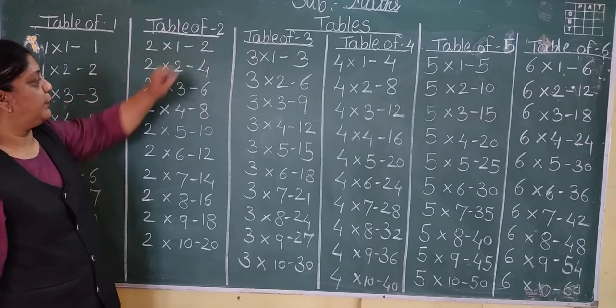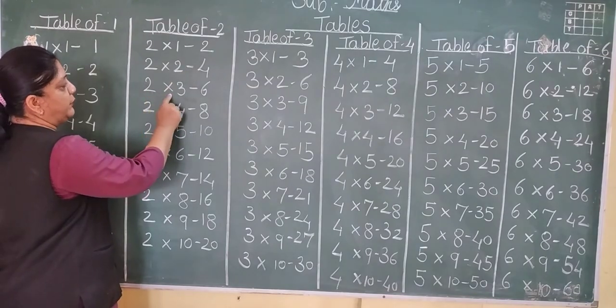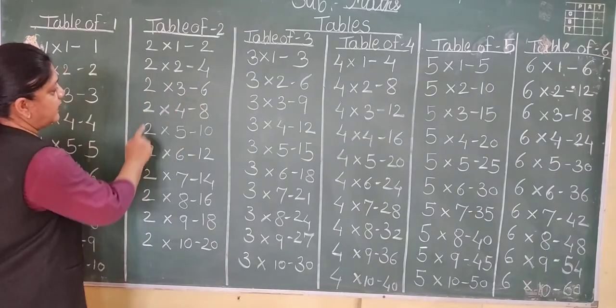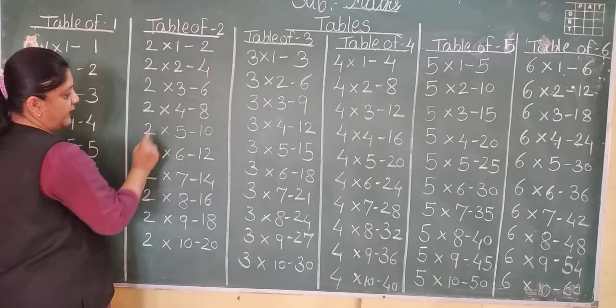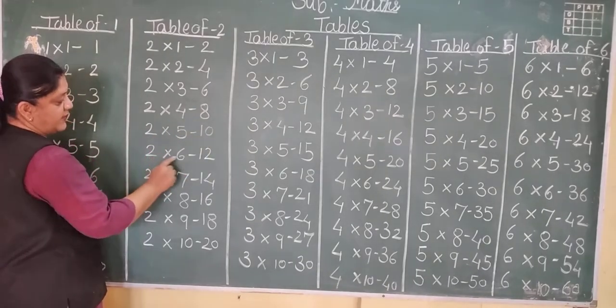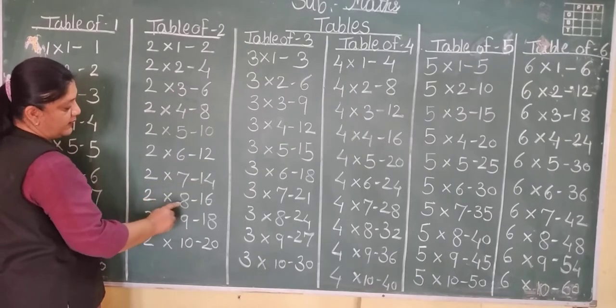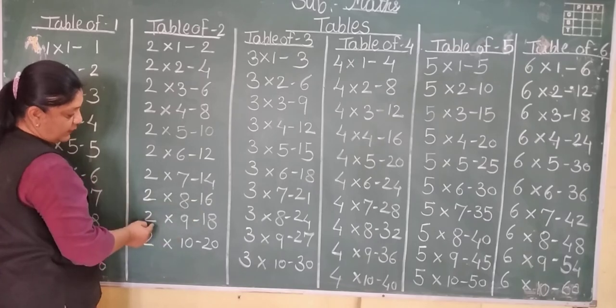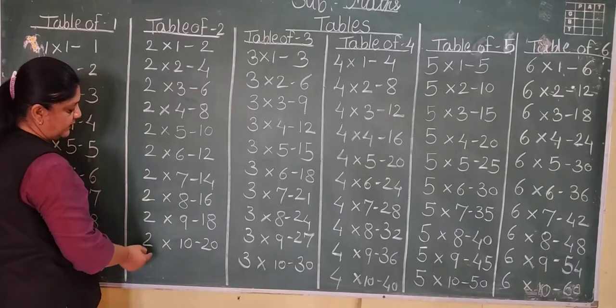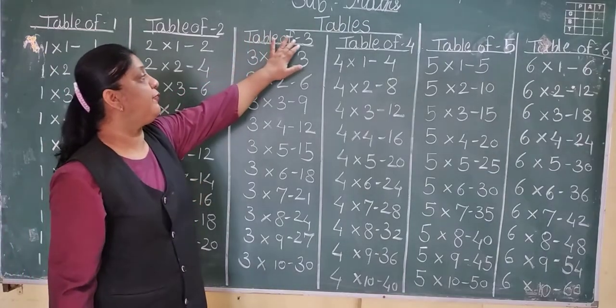Now table of 2: 2 ones are 2, 2 twos are 4, 2 threes are 6, 2 fours are 8, 2 fives are 10, 2 sixes are 12, 2 sevens are 14, 2 eights are 16, 2 nines are 18, 2 tens are 20.